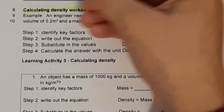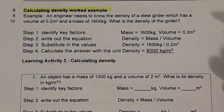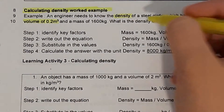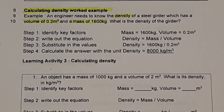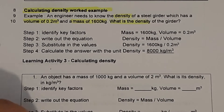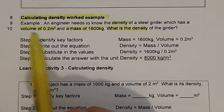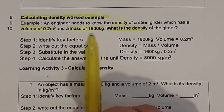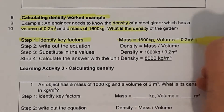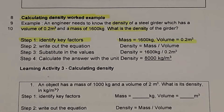Moving on to calculating density, we have a worked example. An engineer needs to know the density of a steel girder which has a volume of 0.2 metres cubed and a mass of 1,600 kilograms. What is the density? In the question, I've highlighted the key information — the volume we're given, the mass we're given, and that we need to calculate the density.